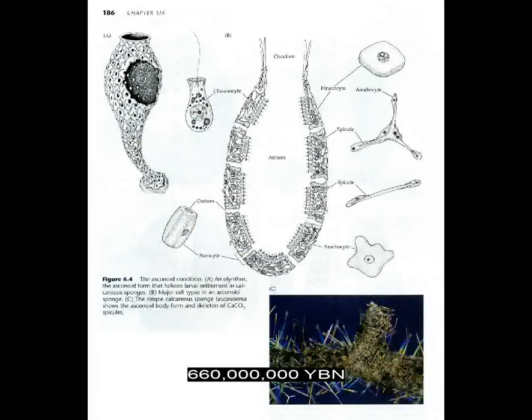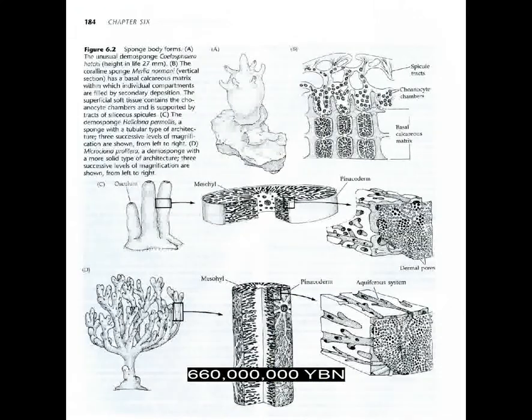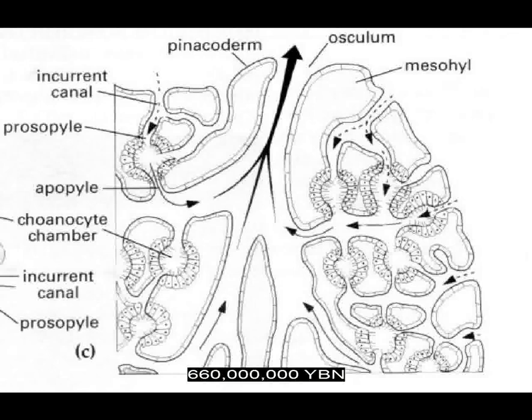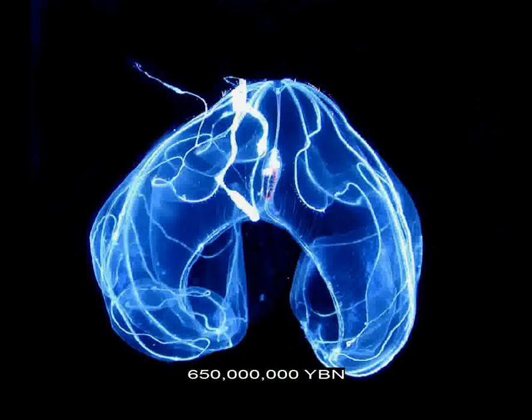Sponges have two layers, each a single cell thick. The outer surface is called the pinacoderm and is made of cells called pinacocytes. On the inner surface is the choanoderm, made of flagellated cells called choanocytes. Between these two thin cellular sheets is the jelly-like mesohyl. Some sponges can live for over 1,000 years. The male gonad, testis or testicle, evolves in a sponge. Cells that group as tissues arranged in layers evolve in metazoans. Unlike the Porifera, in the Placozoa and all later metazoans, cells group as tissues.